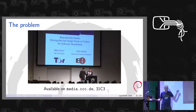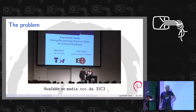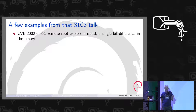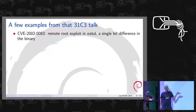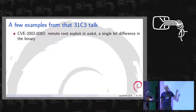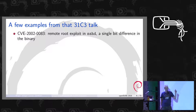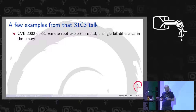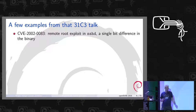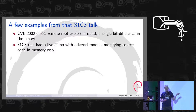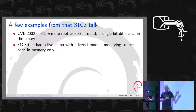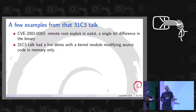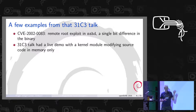They had an example of a remote root exploit in SSH where the difference was only a single bit in the binary. The comparison was 'greater than' when it should have been 'greater than or equal' — and the difference in the binary is one bit. One bit in 500 kilobytes decides whether you have remote root or not. They also had a live demo where they modified sources in memory while compiling, while the source on disk was still the same. You look at the source, it's perfectly fine, you build it and you get a Trojan binary. This is doable.